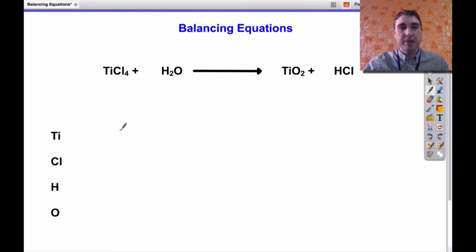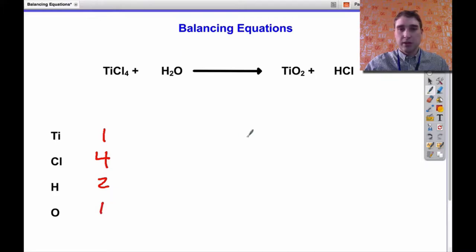The first thing I'm going to do is write down how many of each of the elements I have. On this side I've got one titanium — there's no number after it, so I've got one. I've got four chlorines, so I'll write down four. I've got two hydrogens — the little two means I have two — and I've got one oxygen. On the other side I've got one titanium, two oxygens, one hydrogen, and one chlorine.